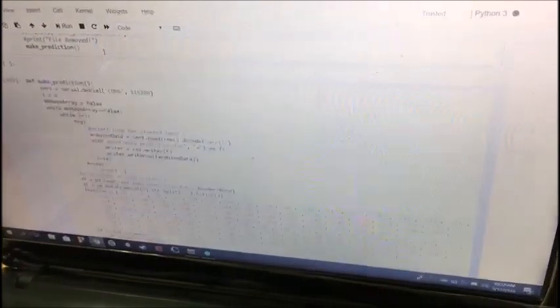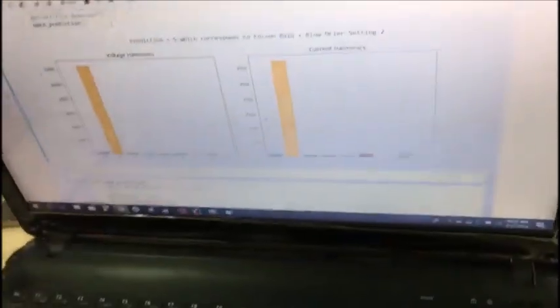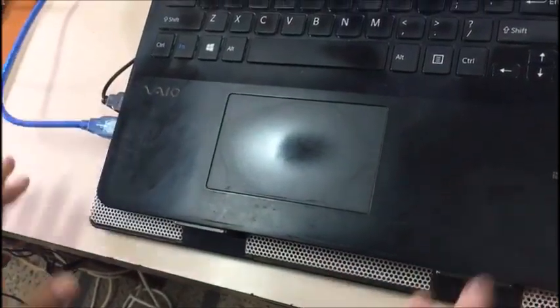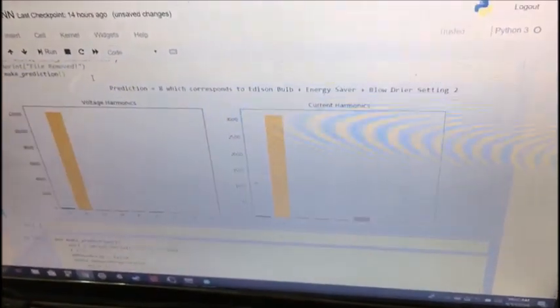So right now we have three loads. The energy saver, the Edison bulb plus the blow dryer. And we're going to check what the model predicts on these three. Of course it's because the system has not stabilized. Let's wait for a moment. That really makes a difference. That's two in a row. That's three in a row. The system predicts three loads.